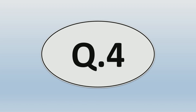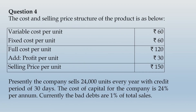Let us move ahead and take up question number 4, a very important question. The cost and selling price structure of the product is as below. Variable cost per unit is Rs. 60, fixed cost per unit is also Rs. 60, so the aggregate — full cost per unit — is Rs. 120. Add profit per unit of Rs. 30, and selling price per unit will be Rs. 150.